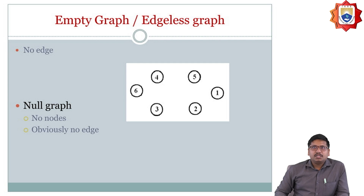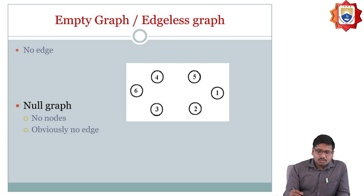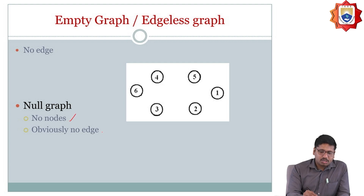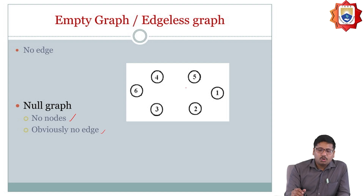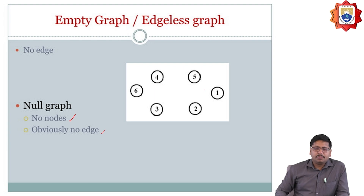Empty graph or edgeless graph: a graph which is not going to have any kind of edges is called an empty graph or null graph. A null graph means no nodes and obviously no edges — that is what we call a null graph. Whenever the graph does not have any kind of nodes and any kind of edges, it should be called as a null graph.